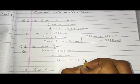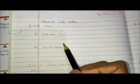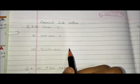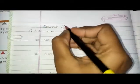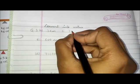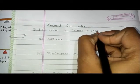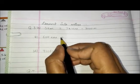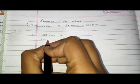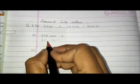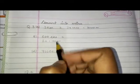In question number 3, we have to convert into meters. First is given 3 kilometers. In one kilometer there are thousand meters, so 3 kilometers will be 3000 meters. Next, 600 centimeters — in one meter there are 100 centimeters. Here we convert smaller to bigger because centimeter is the smaller unit and we are converting it into meters.